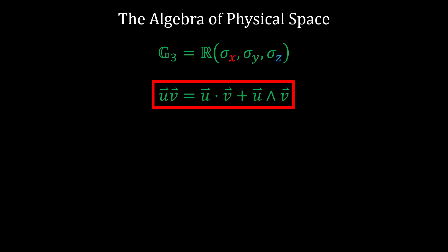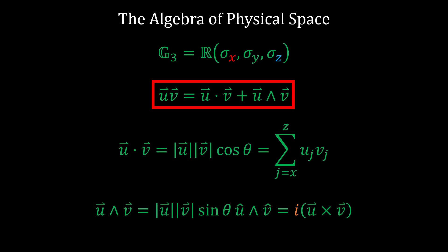For two vectors u and v, their geometric product is the sum of their inner and outer product. The inner product is identical to the well-known dot product, while the outer product is a generalization of the cross product. In the APS, it is equivalent by duality, but it has higher dimensional analogs unlike the cross product.